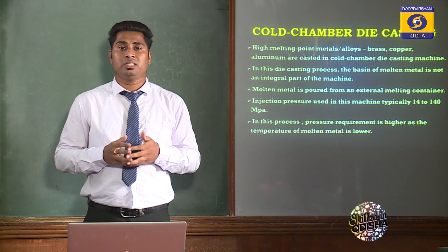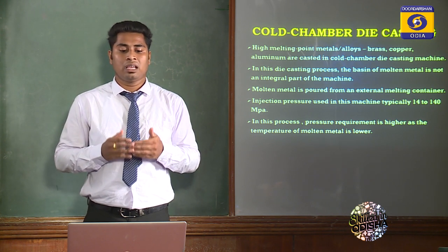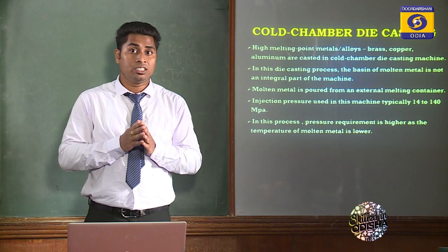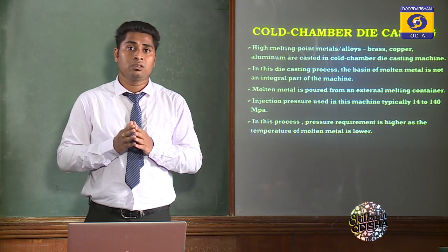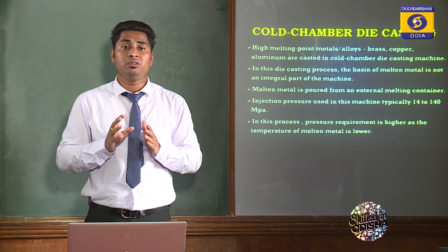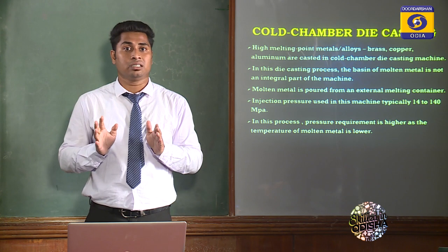In Cold Chamber Die Casting Process, it is only used for high melting point metals and alloys — this is the major difference. In Hot Chamber process it is used for low melting point metals, but in Cold Chamber it is used for high melting point metals. In this process, the melting unit is not an integral part of the machine; an external ladle is used for pouring the liquid metal.